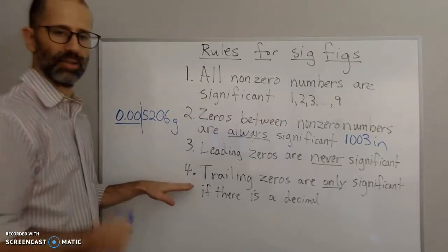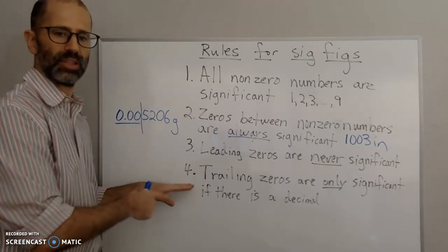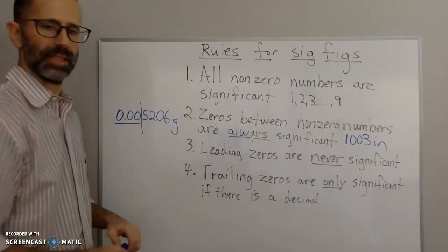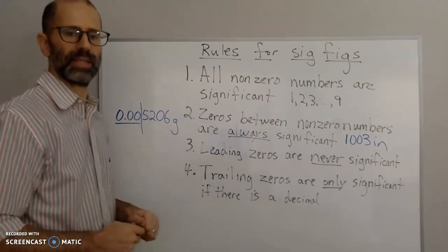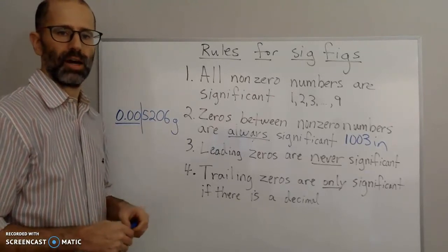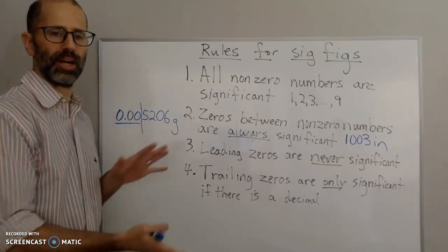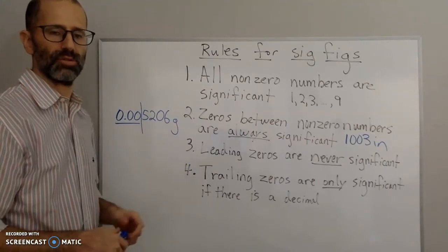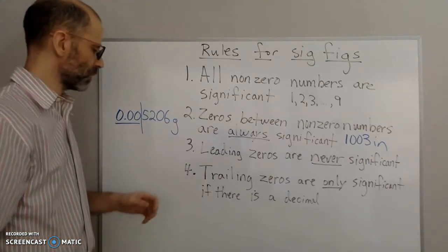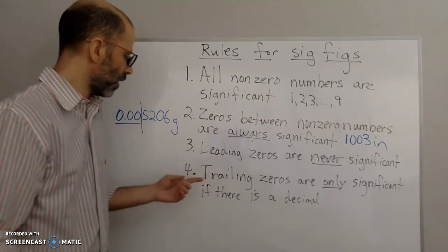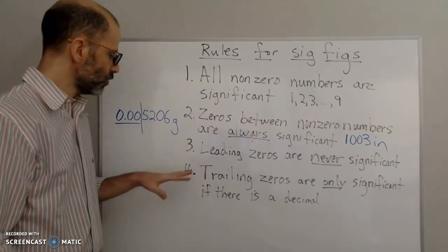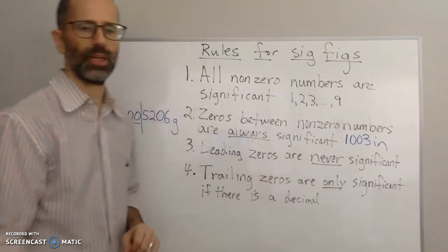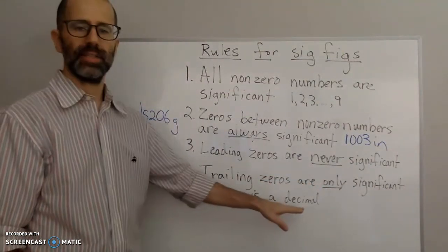Now the last rule — and again, a lot of times you'll see this broken down into two separate rules, but I put it together because I think it makes it easier to remember. If you try to break it up into details, students can get confused. So rule number four: trailing zeros are only significant if there is a decimal.